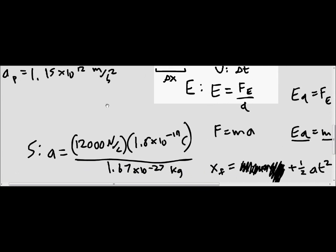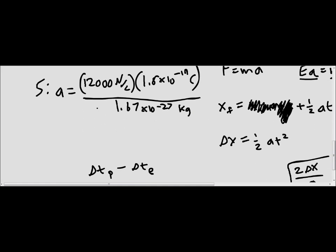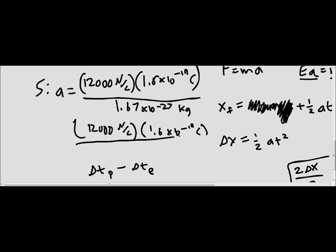Now we're going to find the acceleration for the electron. That's 12,000 newtons per coulomb times 1.6 times 10 to the negative 19 coulombs, over 9.11 times 10 to the negative 31 kilograms.